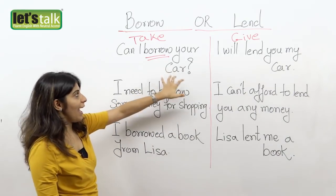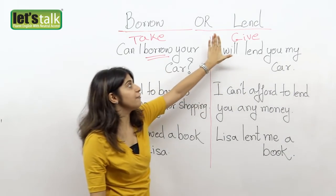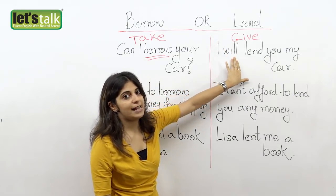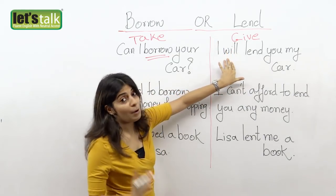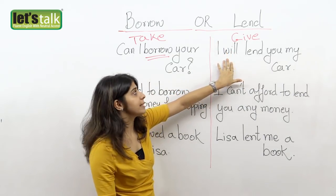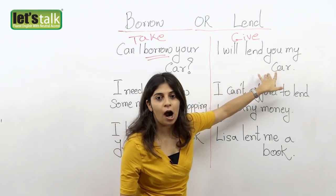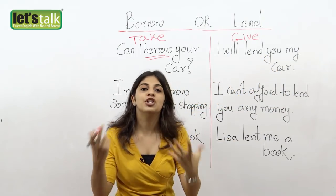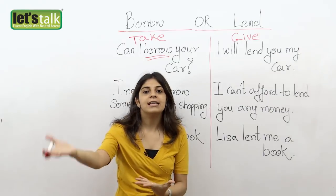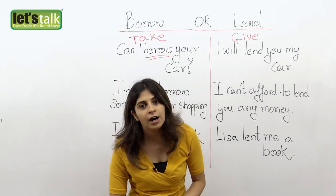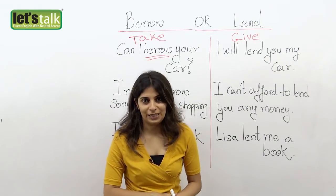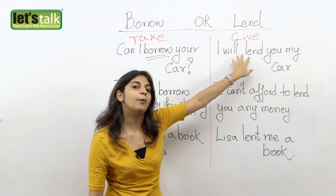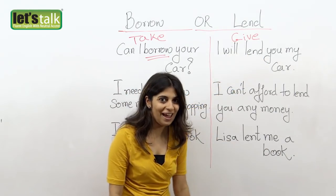So if I ask this to my mom and if we use the word lend, my mom would say: "I will lend you my car." Because she is giving it. She knows that her daughter would return the car, so that's when she says: "Yes, I will lend my car."